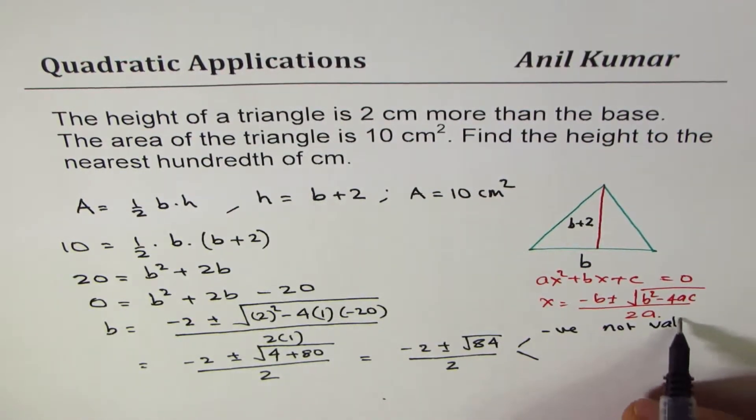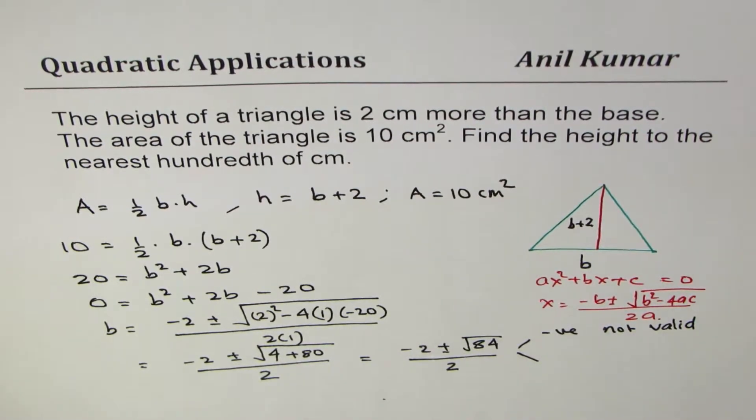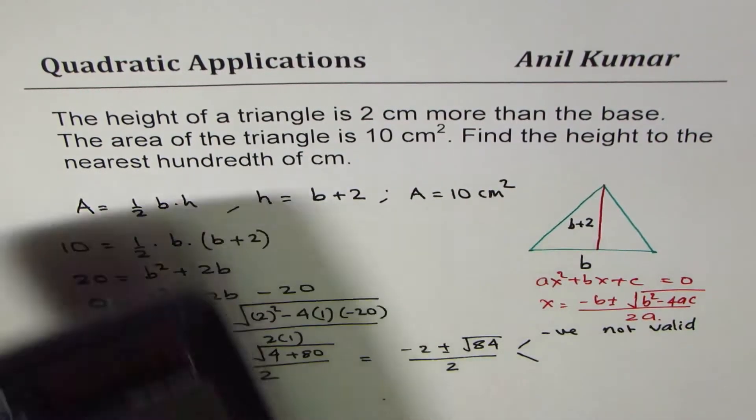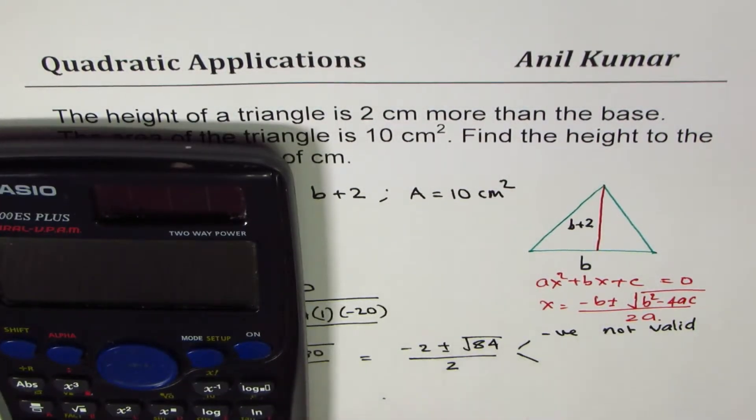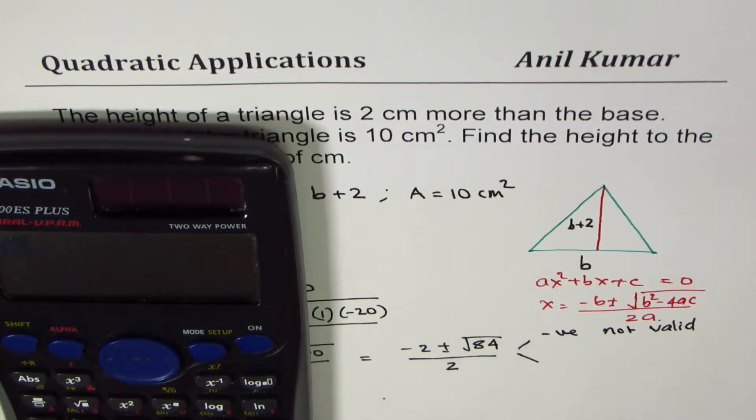Since the dimensions are always positive, let's do the calculation for the positive one. So we have square root of 84. Square root of 84 minus 2, and from here we'll take away 2. Whatever we get we'll divide by 2. We have to write to nearest hundredth.